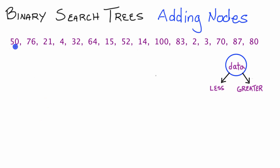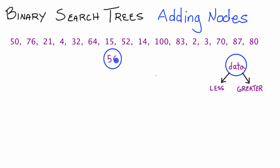First, let's start with 50. The 50 is going to be our root node — we'll put it at the top of our tree, extend a left pointer and a right pointer for this node. So now 50 is the root of our tree.